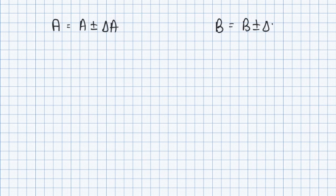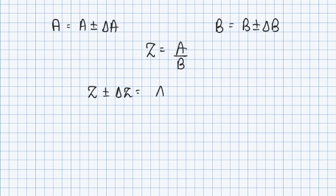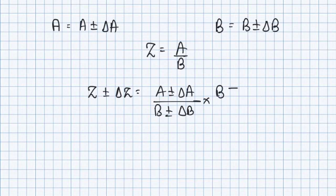For division, again we have two values: a = a ± Δa and b = b ± Δb. Now Z equals a/b (division), and considering absolute errors: Z ± ΔZ = (a ± Δa) / (b ± Δb). Since we have (b ± Δb) in the denominator, we multiply by its conjugate, as it is a standard mathematical expression.